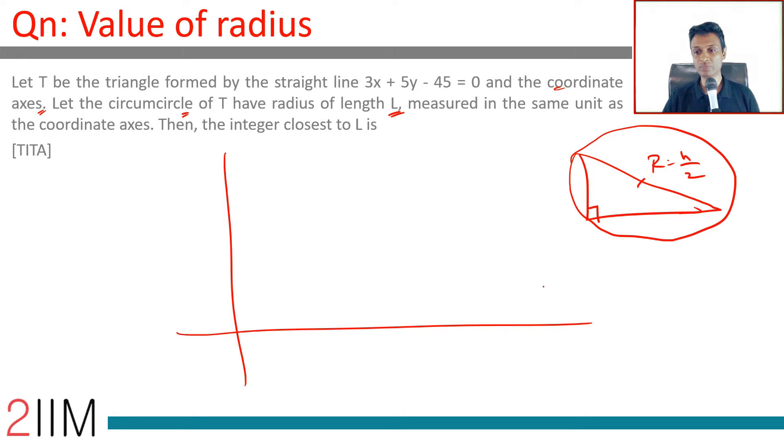So let's draw this 3x plus 5y equals 45. You put y equal to 0, we get x is 15. So 15 comma 0 is a point on this line. You put x equal to 0, we get y is 9. 0 comma 9 is a point on this line, so we have a line like this.